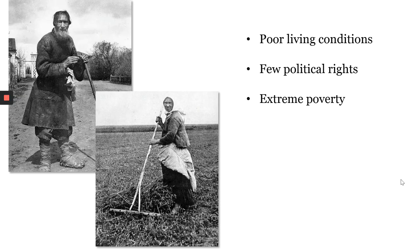So, what you have in Russia is a situation where very few people have a huge amount of wealth, influence, and power, but actually the majority of people in Russia lived as serfs. They had extremely poor living conditions, very few political rights, and lived in extreme poverty. In the decades up to 1917, there had been some attempts to improve the rights and the living conditions of serfs.